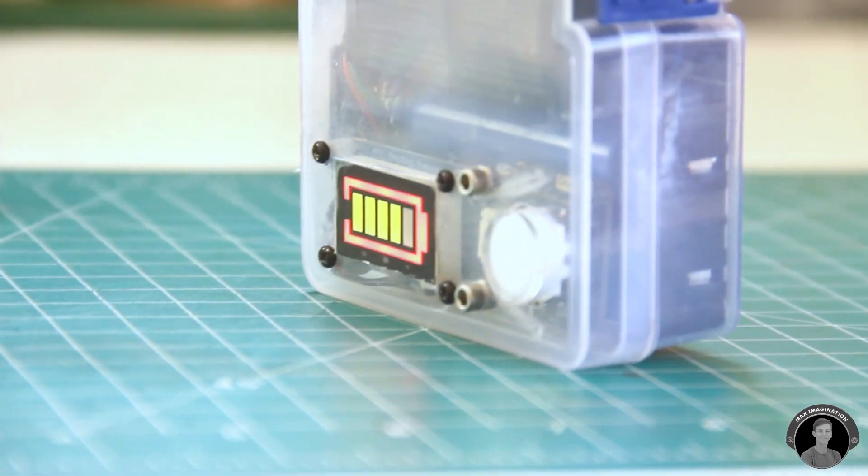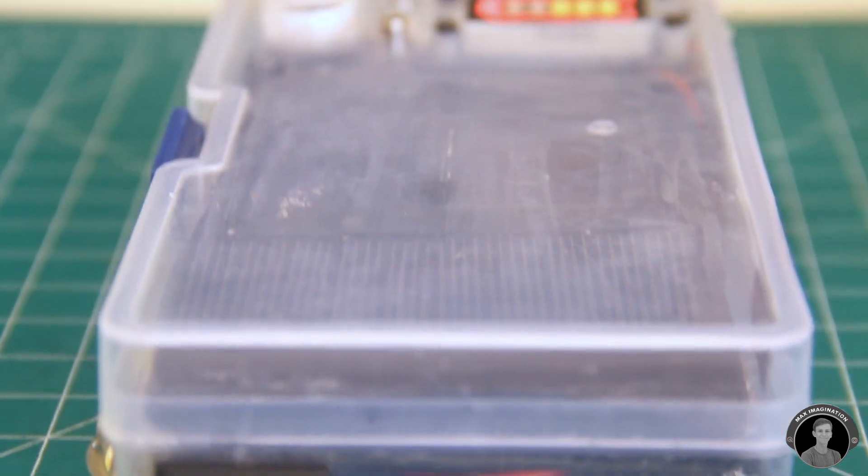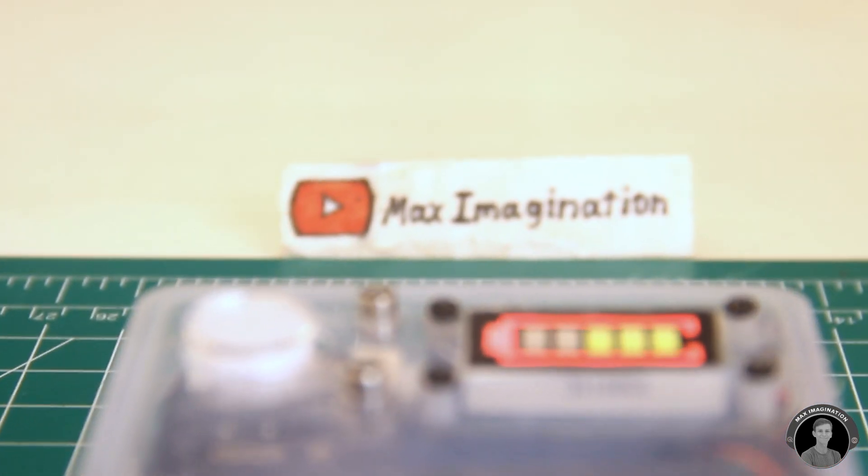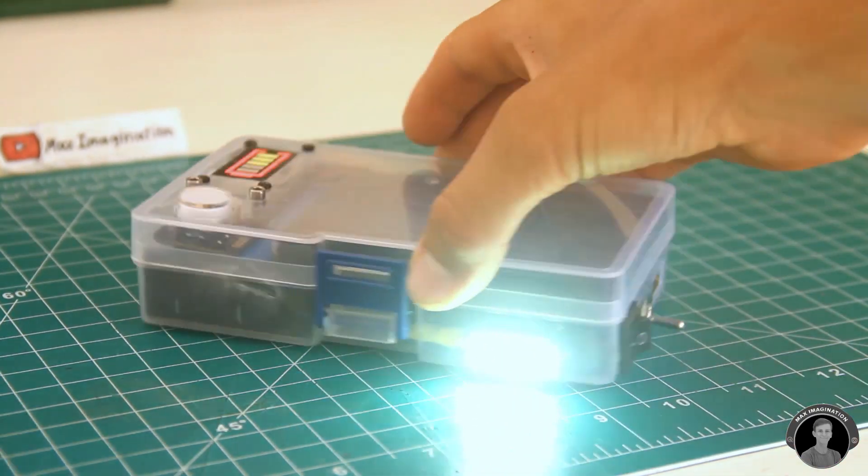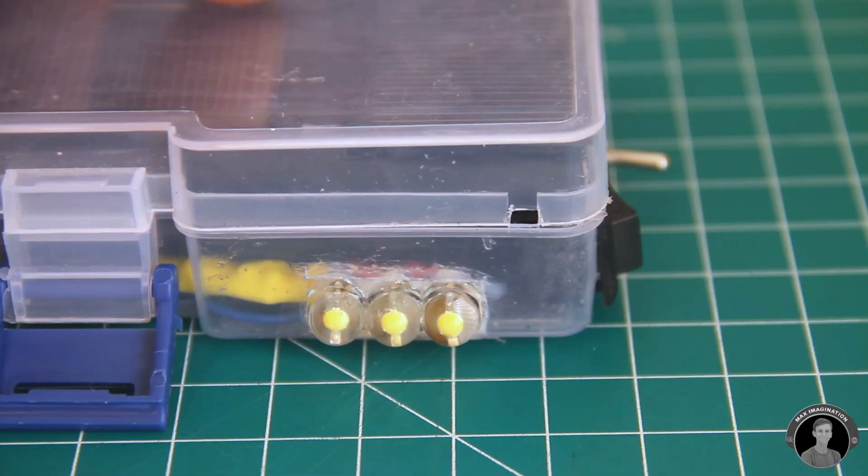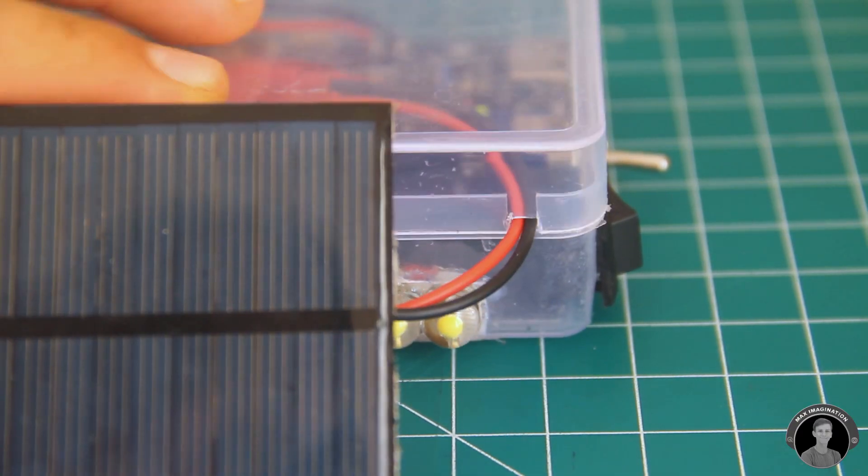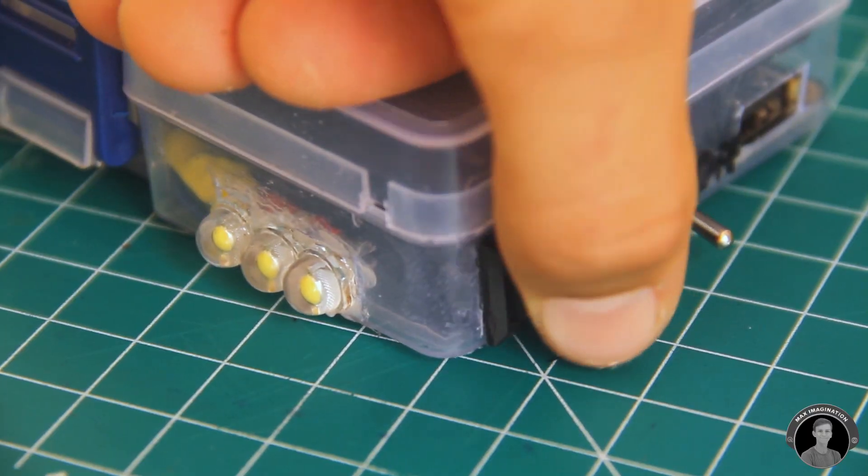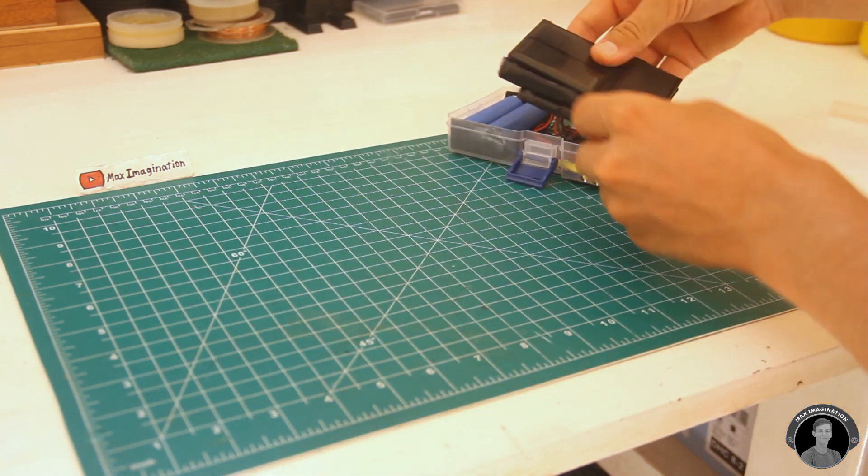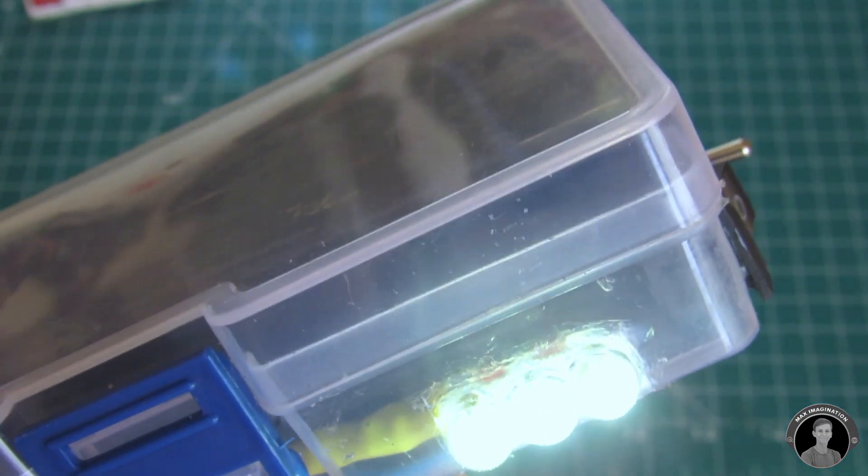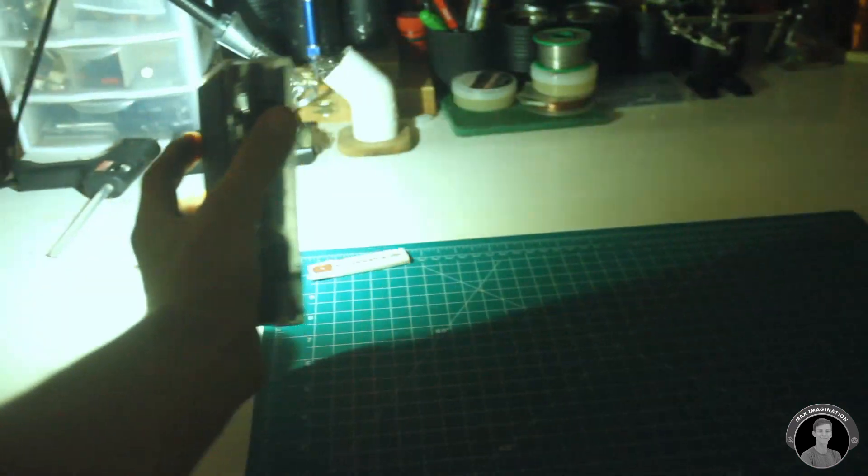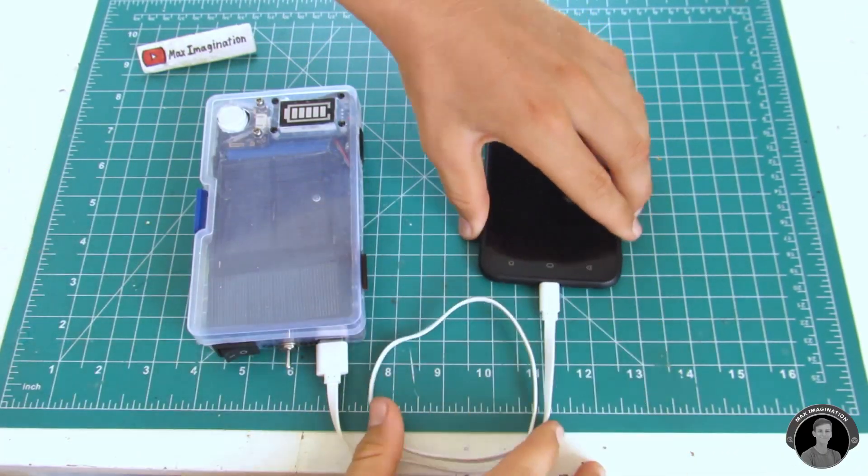Well we've made it. The power bank is complete. Do know that when you're recharging the power bank from the sun or through USB it's important to keep the switch on. So hooking up my phone to the power bank then turning the power bank's switch on you can see as it starts to charge.